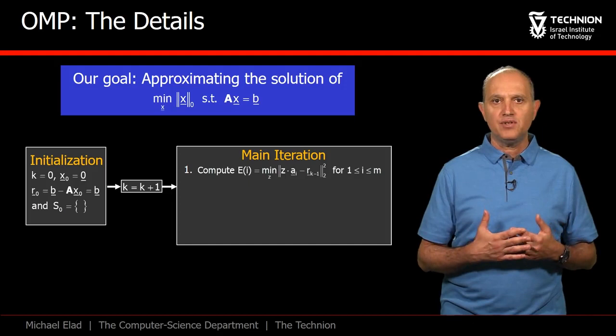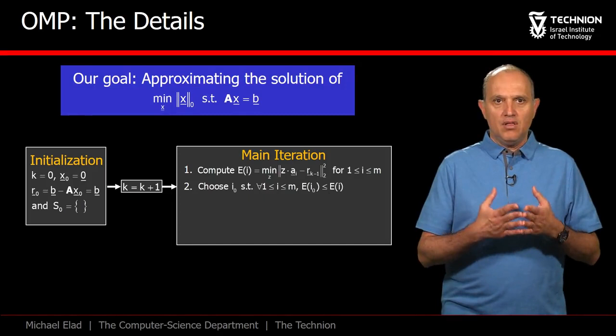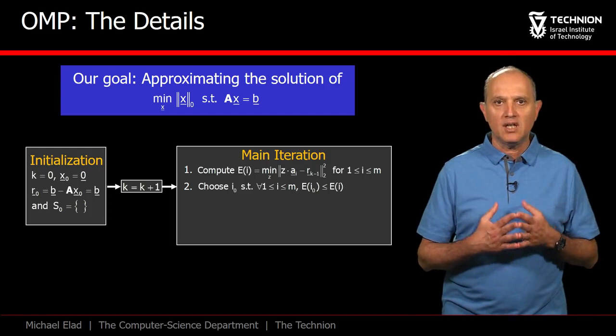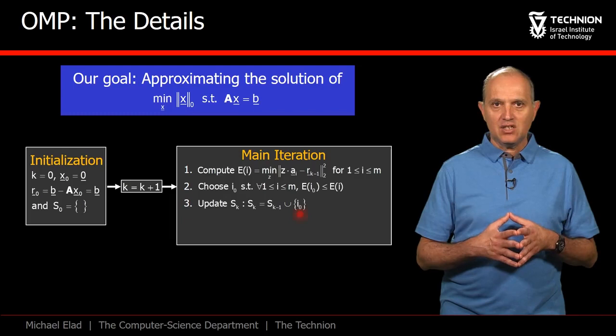Suppose that we did these M tests and got the error values EI. The best atom to choose is the one leading to the smallest error. Let's assume that it is the atom I0.